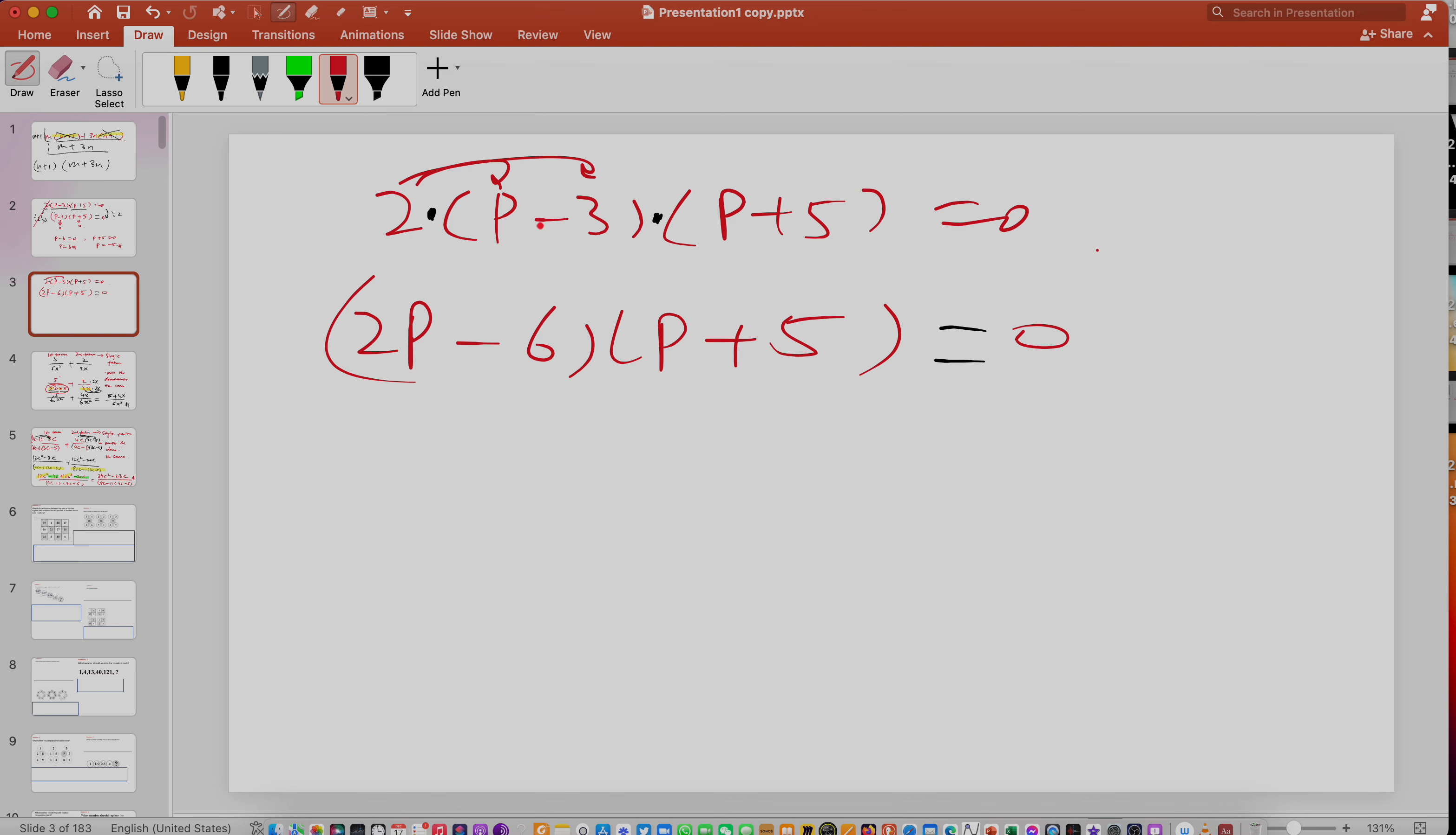So if you multiply it inside, you end up with this, right? So it's 2p minus six equals to zero. Then p plus five equals to zero. So this one will give you negative five. This one will give you 2p equals to six, p equals to three. Can you see you get the same answer?